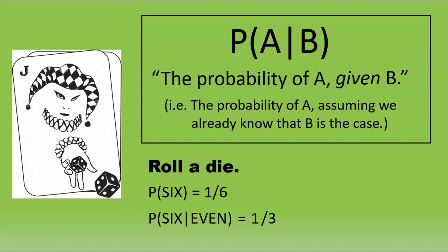Now let's reverse the 6 and the even, and consider the probability of rolling an even number, given that the result is 6. This is rather different, and rather obvious. If we know that the roll was a 6, then there's no uncertainty at all. 6 is definitely even, therefore this probability is 1.